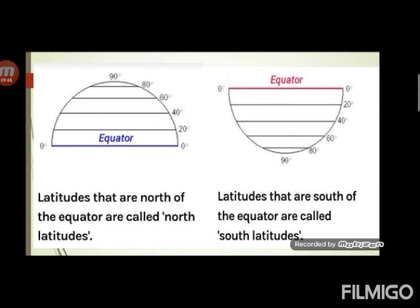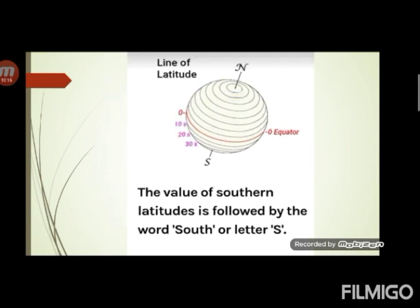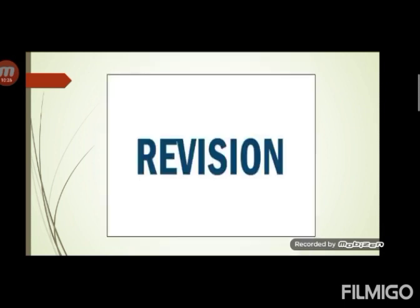You might be thinking that the northern hemisphere has 1 to 90 degrees and the southern hemisphere also has 1 to 90 degrees — how will we differentiate between them? The value of northern hemisphere latitudes is followed by the word North or letter N, and it is read as 10°N, 20°N, 30°N and so on. The value of southern latitudes is followed by the word South or letter S, and it is read as 10°S, 20°S, 30°S and so on.